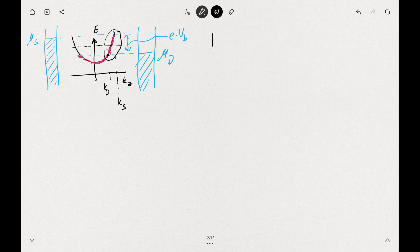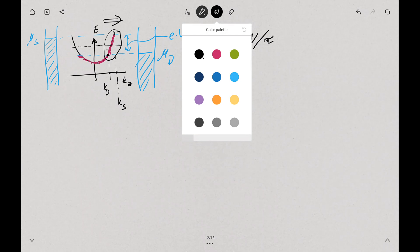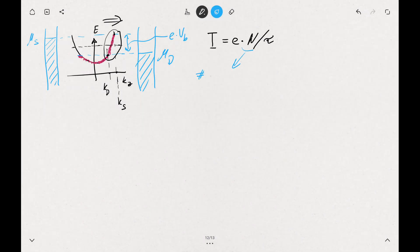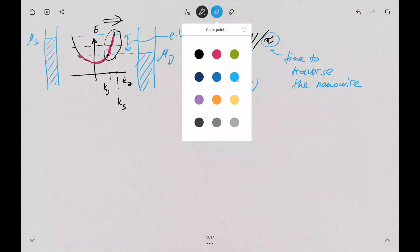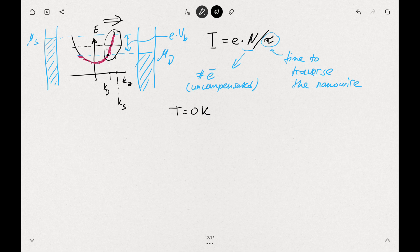So how do we compute this current? We can just start simply counting. The current is the electrical charge times the number of electrons which move to the right in this diagram, divided by the time it takes the electrons to transit across the nanowire. This is our number of electrons uncompensated, and this is the time to traverse the nanowire. We're using the assumption that the temperature is zero. Now we need to calculate the time and this number of electrons.